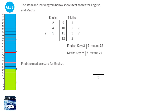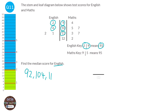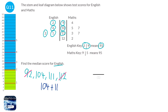With a stem and leaf diagram, the numbers in the middle often represent tens. We look at the key first — 3 line 9 means 93, so the middle numbers represent tens. Our data for English gives us 92, 104, 111, and 112. To find the median, we cross out the biggest and smallest until we're left with 2 — which are 104 and 111. We add them and divide by 2: 104 plus 111 is 215, divided by 2 gives 107.5.